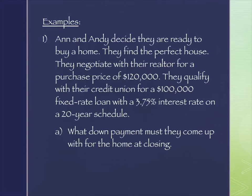We're going to go back to our friends Ann and Andy. They're ready to buy a home. They find a house, negotiate their price, and the purchase price is $120,000. They've talked with their credit union, which is offering them a loan of $100,000 — a fixed-rate mortgage at 3.75% interest, on a 20-year note.